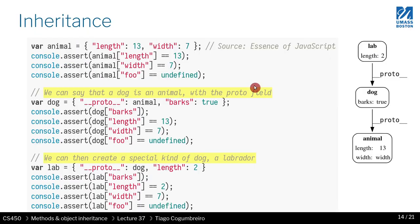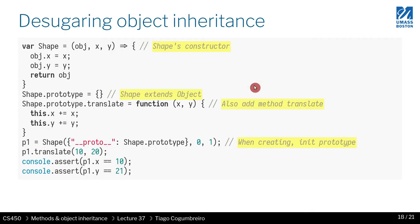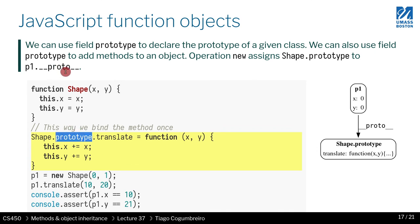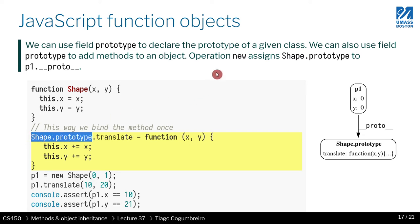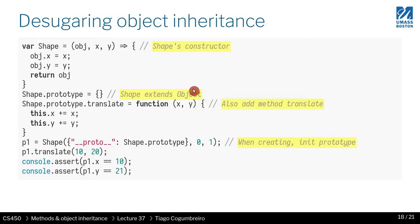That's what we're doing here. The name prototype comes from this connection with `__proto__`. Prototype is the template connected to every instance of shape. The `__proto__` field will point to this prototype field. The operator `new` assigns shape.prototype to p1.__proto__. Let that sink in.